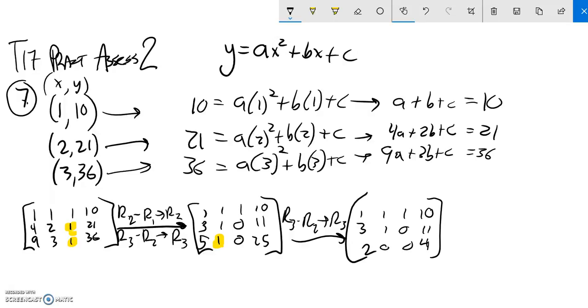Cool. So that means that 2 times a is equal to 4, so a must be 2. And if a is 2, you can plug that into this equation. 3 times 2 plus b equals 11, so 6 plus b is 11. I'm going to subtract 6 from both sides. It looks like b must be 5.